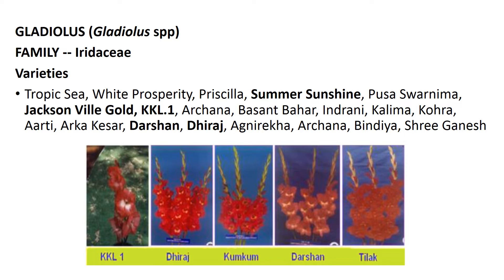There are many varieties of gladiolus, as in chrysanthemum and anthurium. The most important varieties — examiner choices which I have made bold — are: Summer Sunshine, Jacksonville Gold, KKL1, Darshan, Dirja, Archana, and Sriganesh. You should remember these varieties. This picture shows the flowers of different varieties.